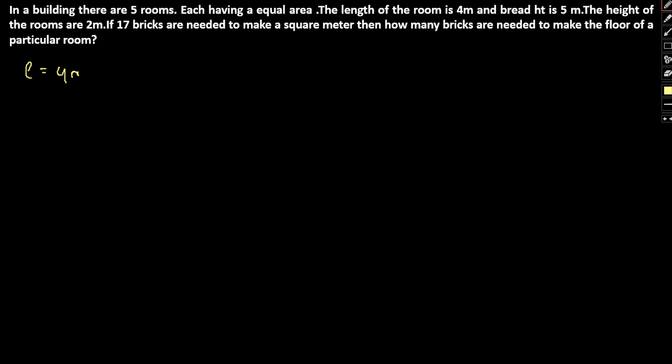Here, given length equals 4 meters, breadth equals 5 meters, and height equals 2 meters. Essentially, what we have here is simply a cuboid. So this is the length equal to 4, breadth equal to 5, and height h equal to 2. This is it.